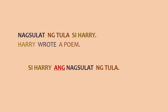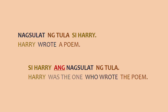So, how do these changes affect the meaning of the sentence? If you construct it this way, what this will now mean is: Harry was the one who wrote the poem. Or, it was Harry who wrote the poem. So, it answers the question: who did the action? Or, in this case, who wrote the poem? It's like it wasn't clear who did the action and you are clarifying — you are saying, who did it?